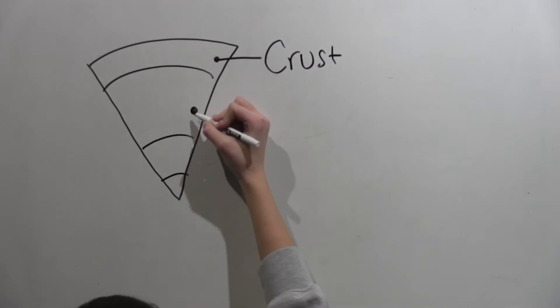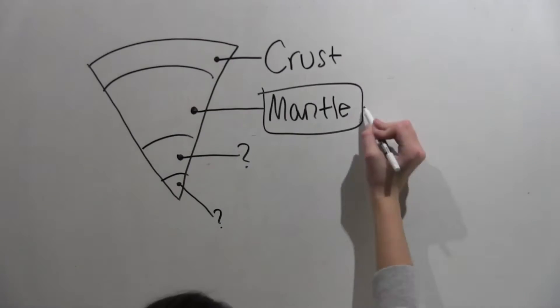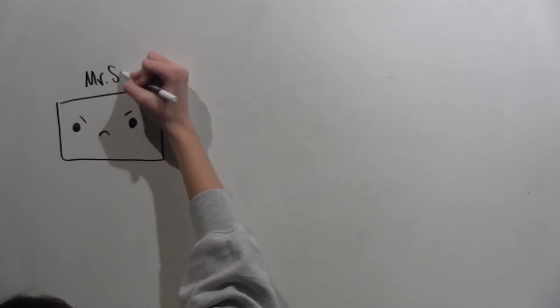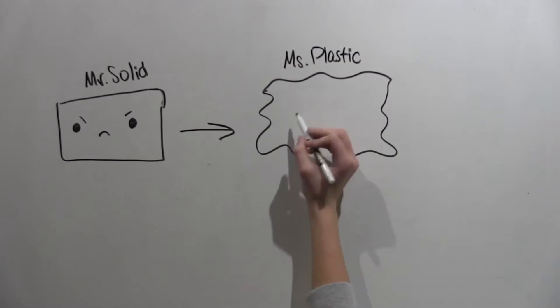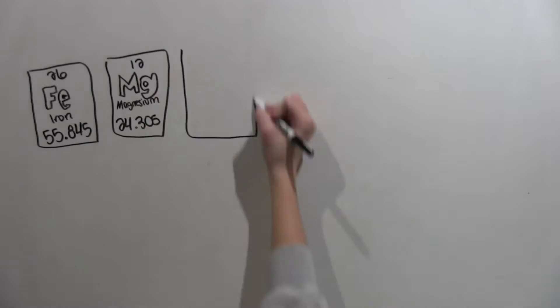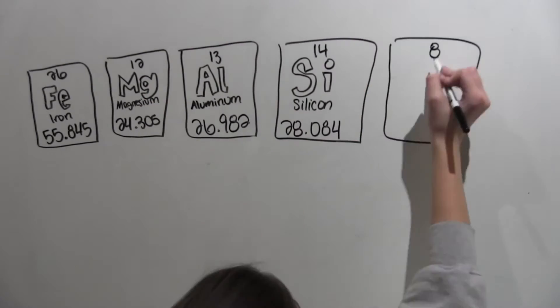Then right below the crust is the mantle. The mantle is basically like a solid layer, even though it can deform and turn into plastic. It's made up of iron, magnesium, aluminum, silicon, oxygen, and silicate.